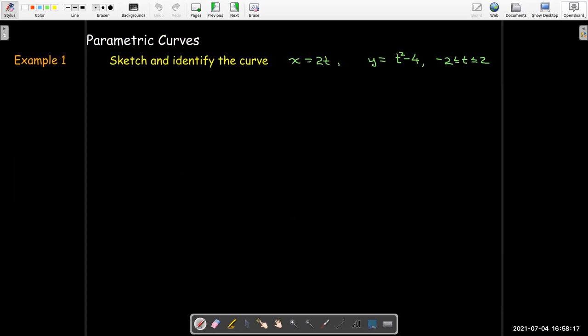For example, let's sketch and identify the curve that has the parametric equations x equals 2t and y equals t squared minus 4. And t only goes between negative 2 and positive 2.